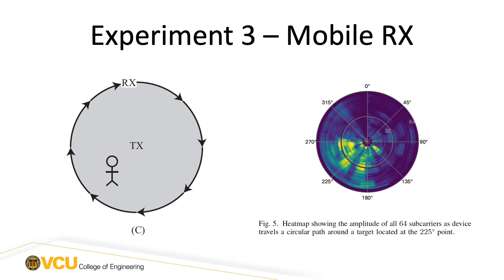The resulting CSI heatmap shown on the right shows that the target causes some spikes in the received channel state information around the 225 degree mark, indicating that there's a target somewhere around here, which makes sense based on the image on the left.